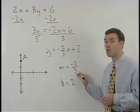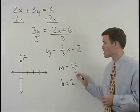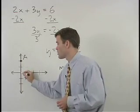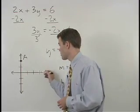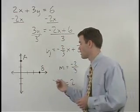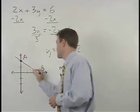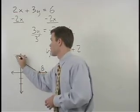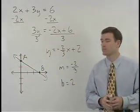From there we take our slope of negative 2 thirds, so we go down 2 and to the right 3 to plot our second point and we graph the line.